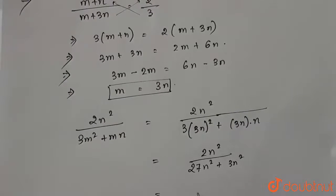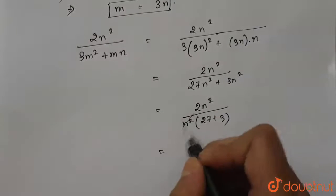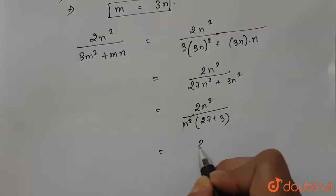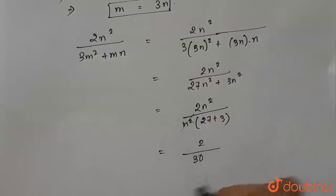This will be 2n squared divided by n squared into 27 plus 3, which equals n squared will get canceled, so 2 by 30, which equals 1 by 15. And this is our required solution.